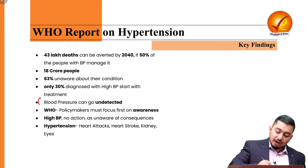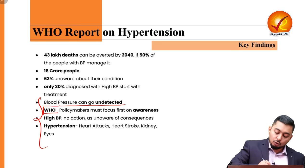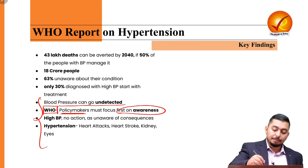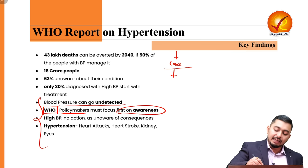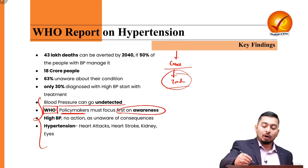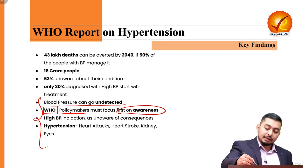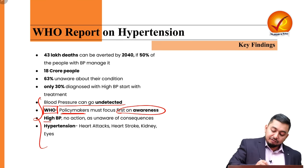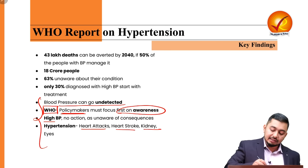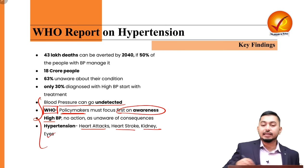Blood pressure can go undetected, so WHO recommends that policymakers must first focus on awareness — because even when cases are detected, people are not going for medical treatment. Awareness about the ramifications of hypertension is extremely essential, since high BP can lead to heart attacks, heart strokes, kidney failures, and can also affect the eyes.